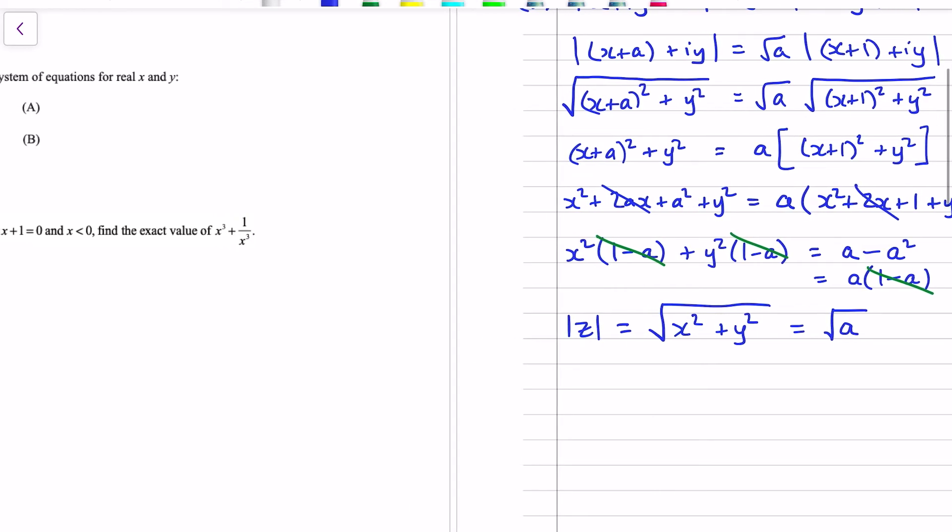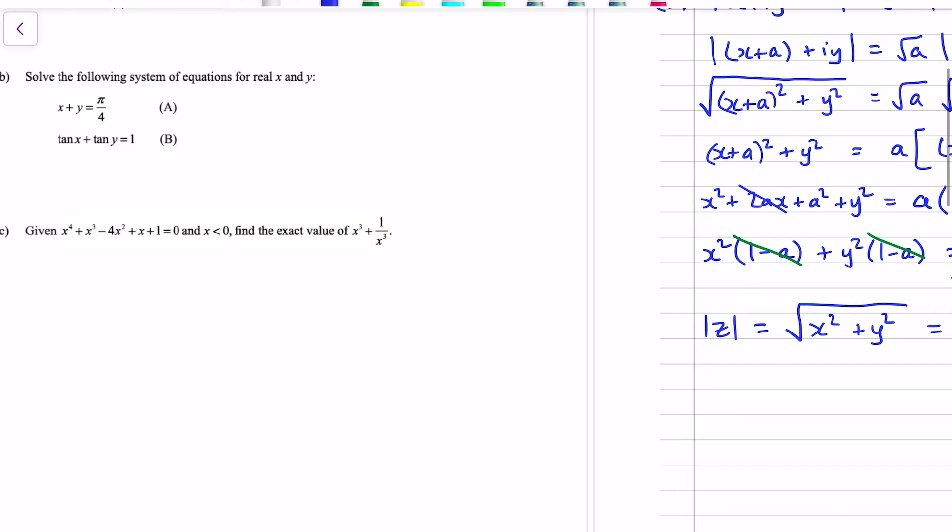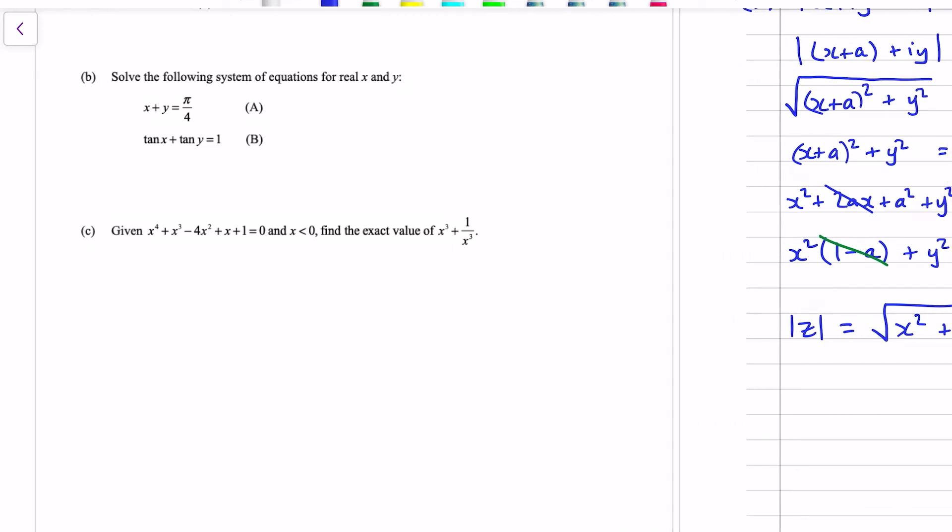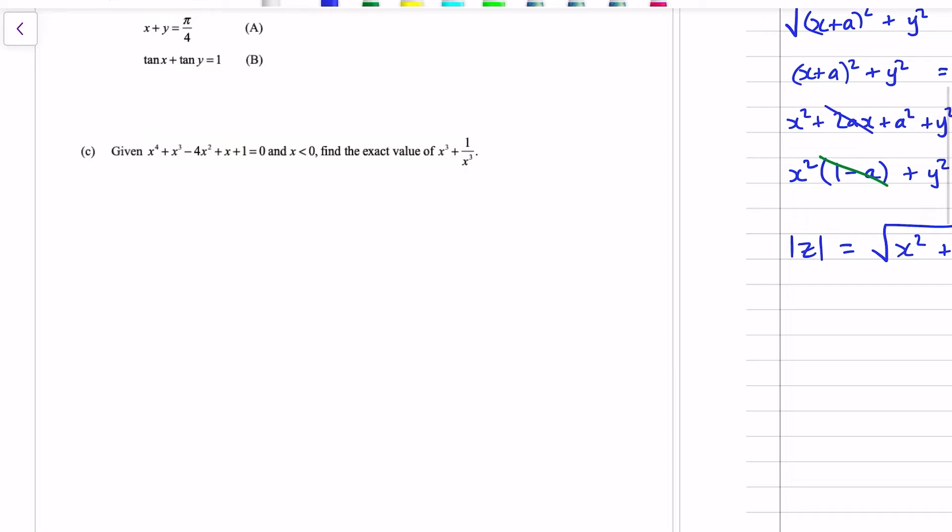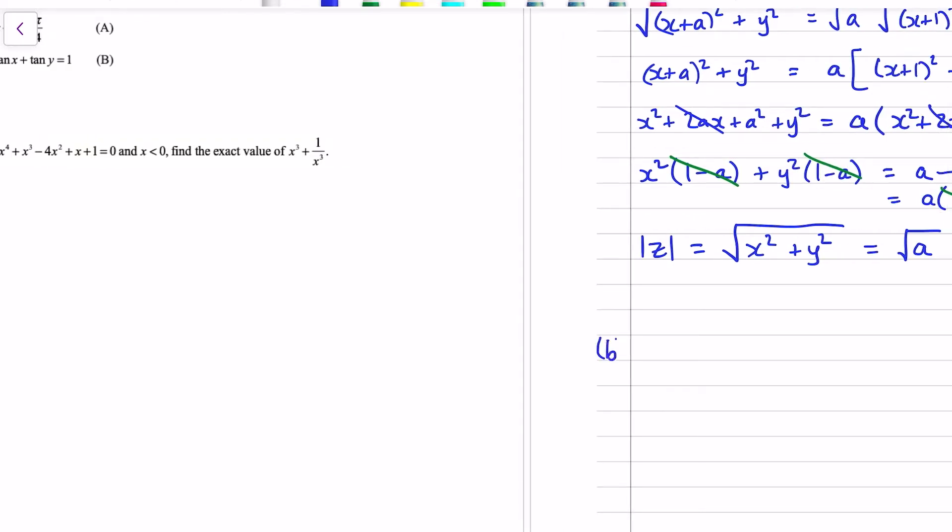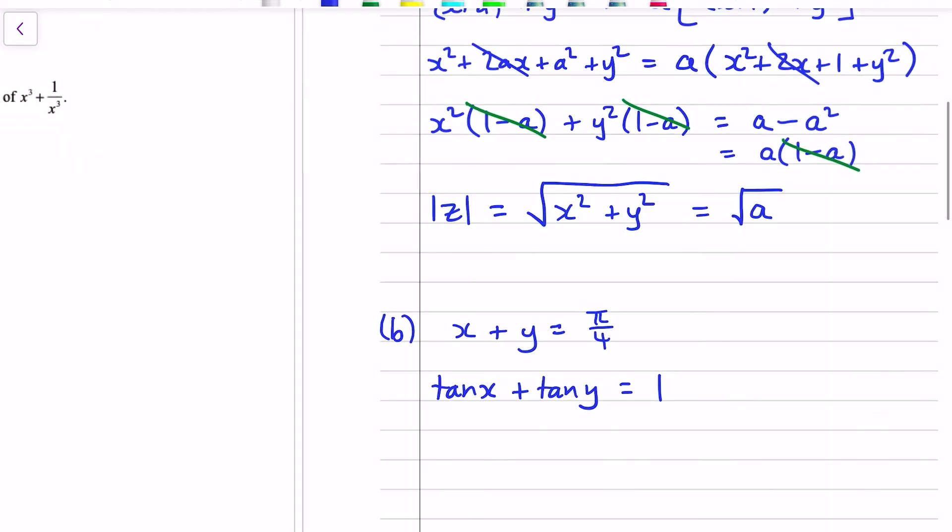OK, so that's part A. We'll look at an alternative solution for that shortly. Part B. System of equations. x plus y equals pi over 4. Tan x plus tan y equals 1. You might spot straight away that 0 pi over 4 is a solution. When x is 0 and y is pi over 4, the equations are satisfied. The equation is also symmetric, which means that the x and y are interchangeable.